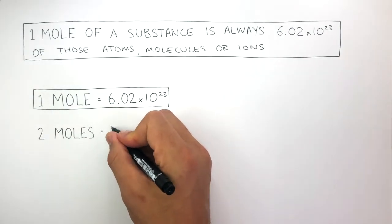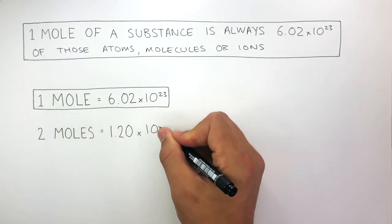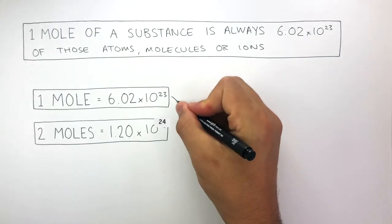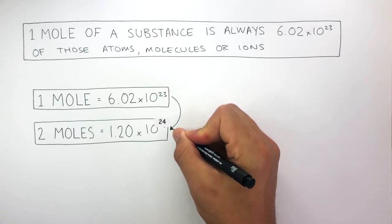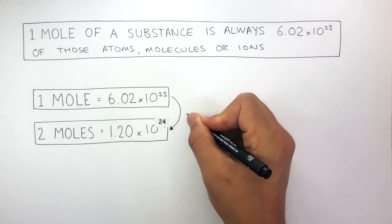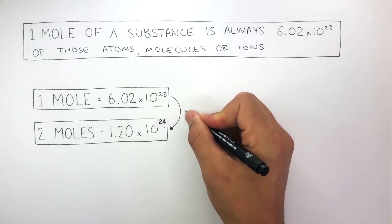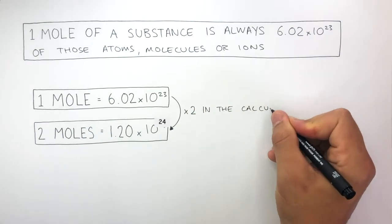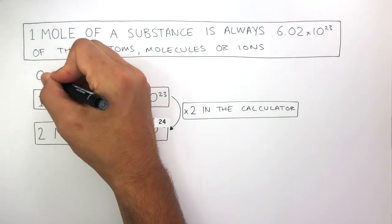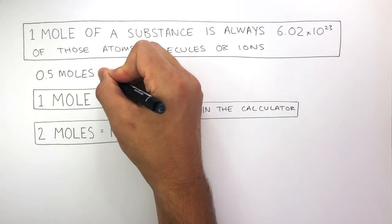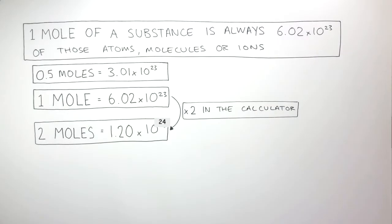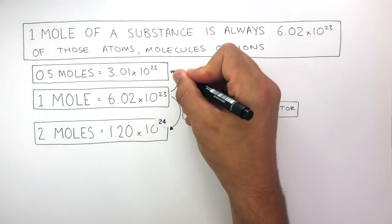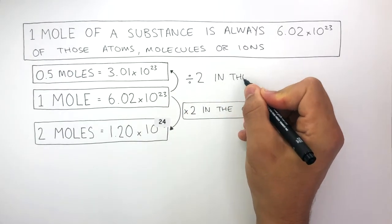Two moles equals 1.20 times 10 to the power of 24. To get that, you put 6.02 times 10 to the power of 23 into your calculator and multiply by 2. You can also calculate 0.5 moles, which equals 3.01 times 10 to the power of 23 — that's 6.02 times 10 to the power of 23 divided by 2 in the calculator.